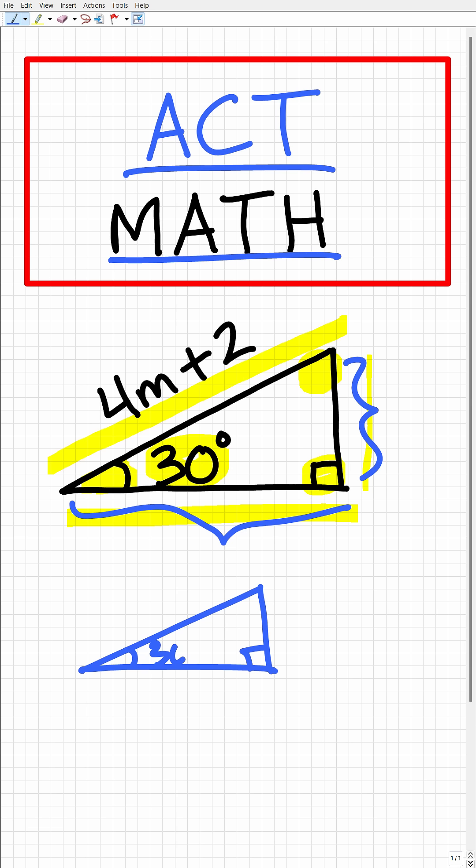Okay, so here is our 30 degree angle. So if this shortest side is x, the hypotenuse will always be double the length of the shortest side. So that will make the hypotenuse 2x.